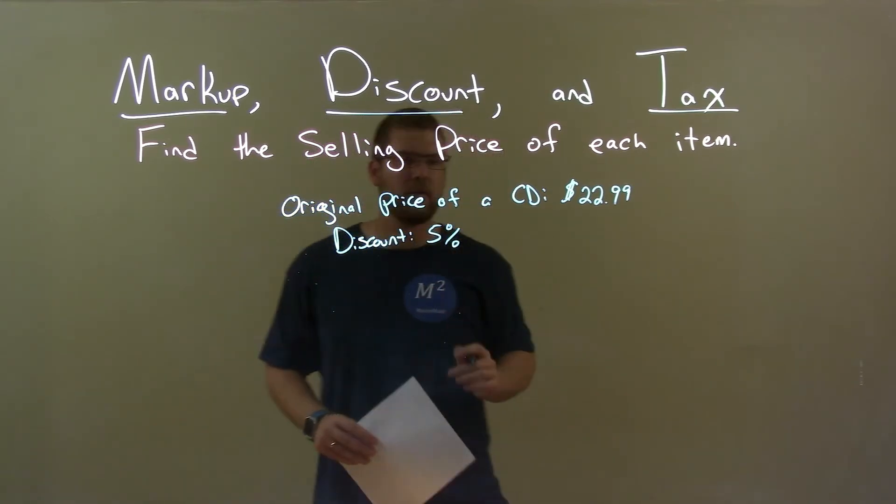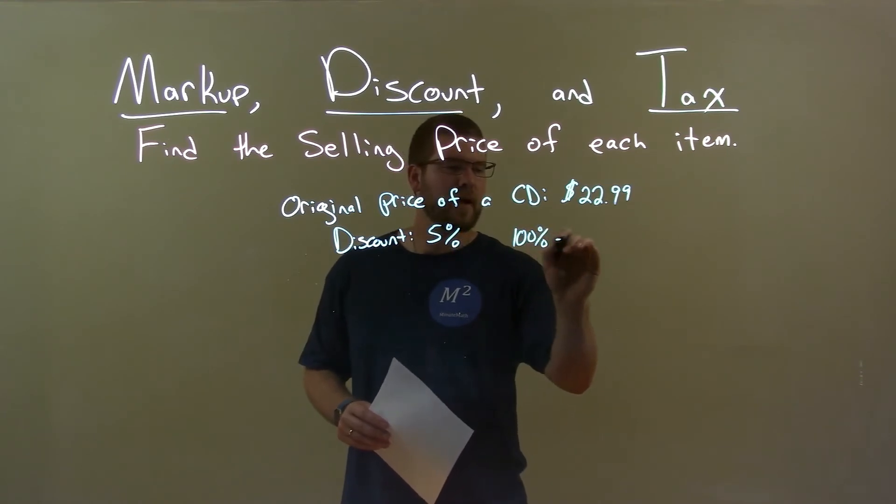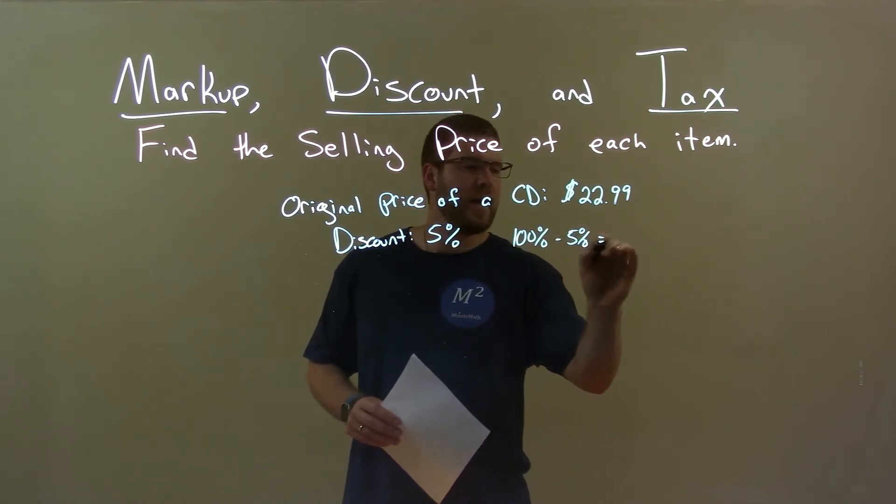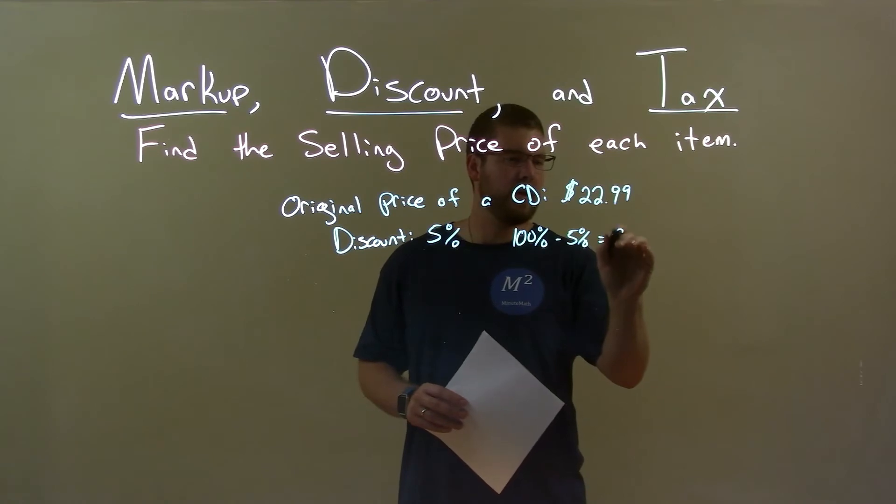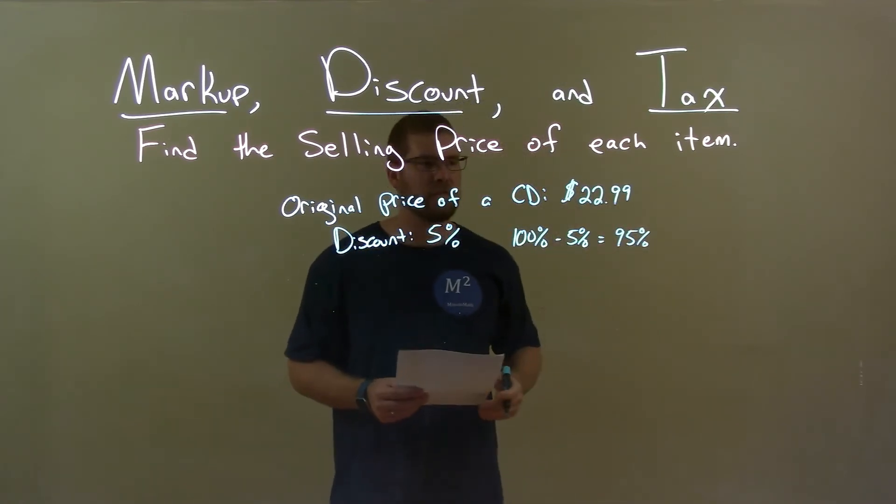So, with a discount of 5%, we take 100%, we subtract that 5% from it, and we have a total percent price that we're going to pay of 95% of the original purchase price.